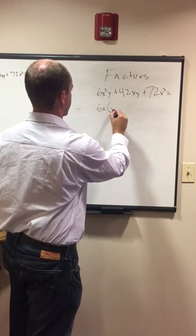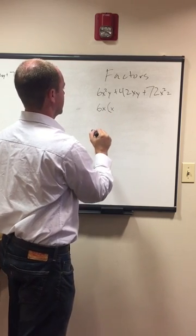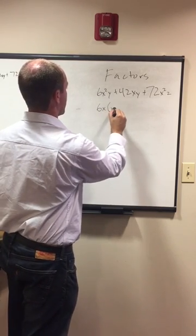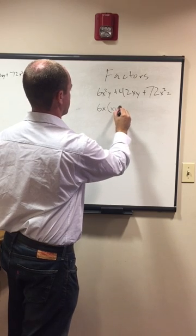All right, to get the 6x²y, that's an x because x times x is x². And then we need to throw a y on there, so there's our y, plus...